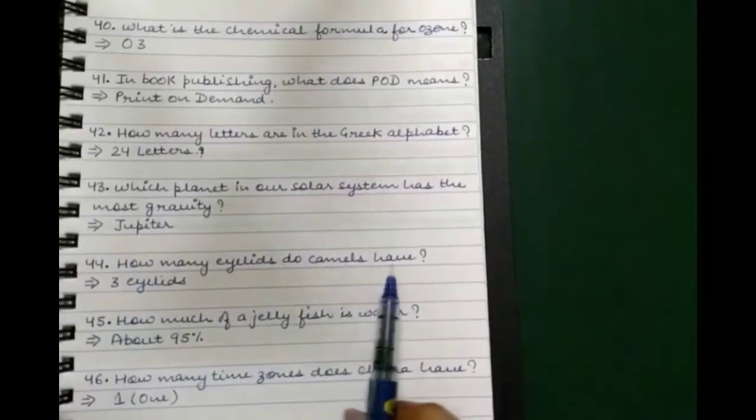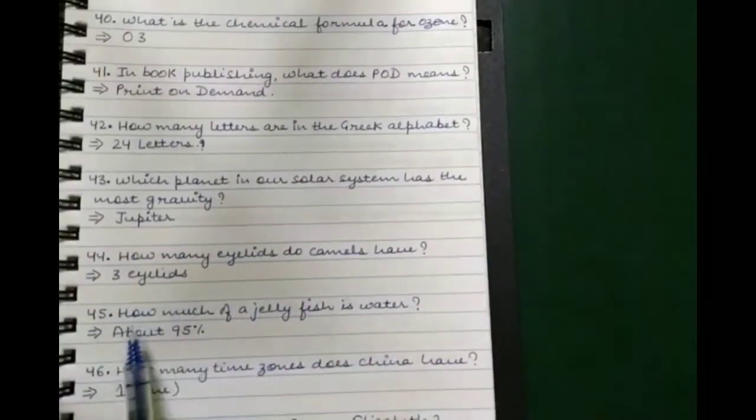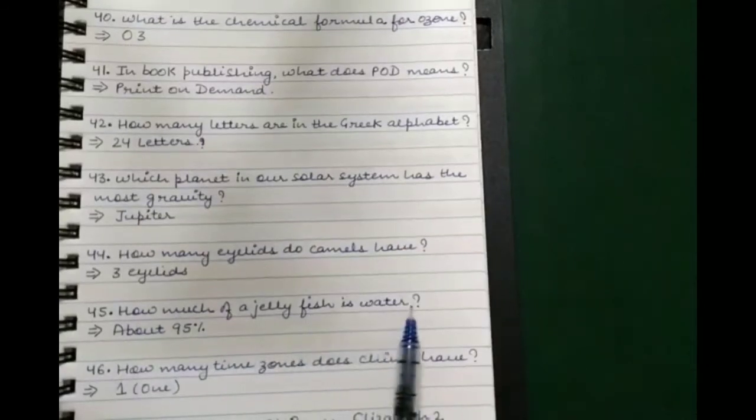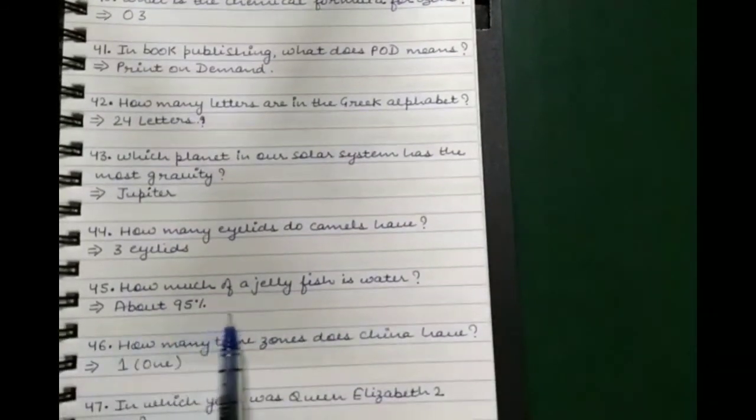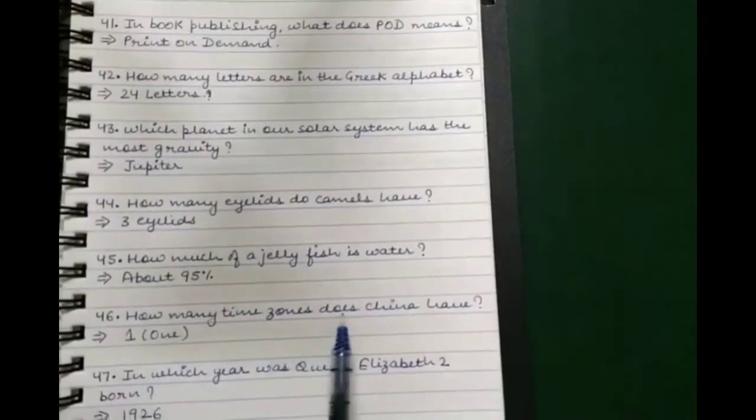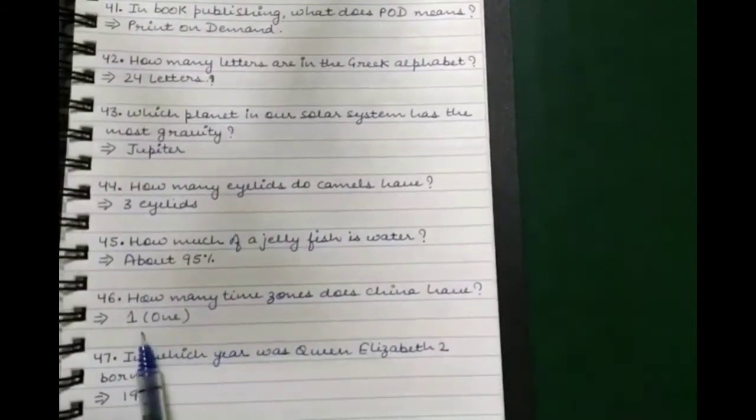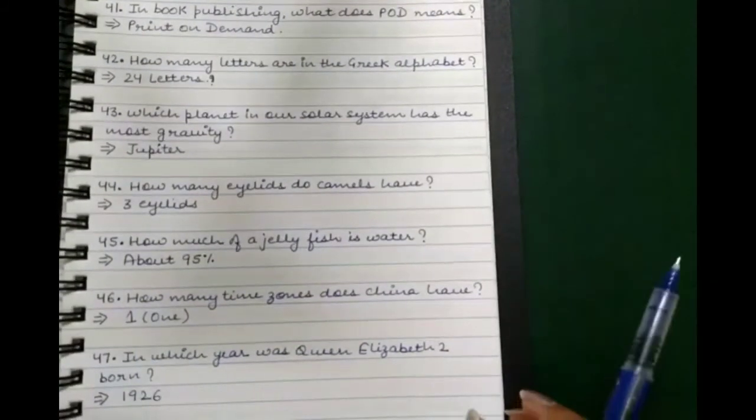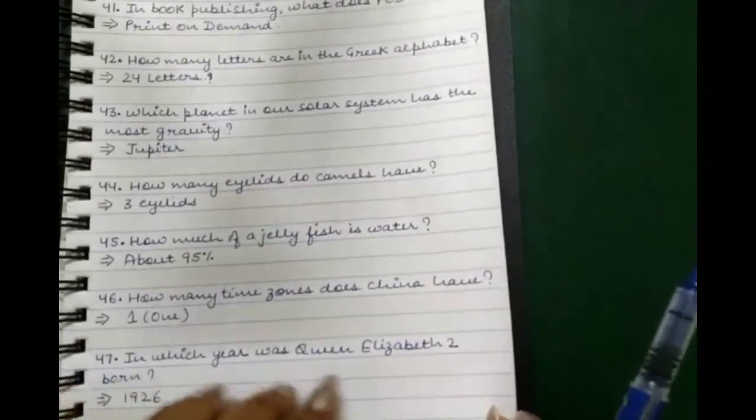How many letters are in the Greek alphabet? 24 letters. Which planet in our solar system has the most gravity? Jupiter. How many eyelids do camels have? Three eyelids. How much of a jellyfish is water? About 95%. How many time zones does China have? One. In which year was Queen Elizabeth II born? 1926.